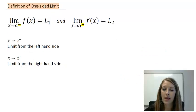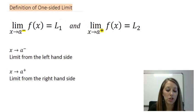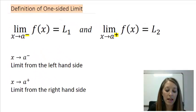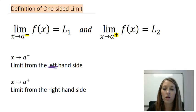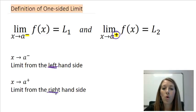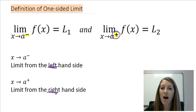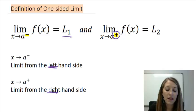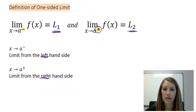It looks the same as the definition of a limit, or at least the notation, except for one small change. If we see a to the negative, that actually means we're looking at the left-hand side, or the left limit. If we see x is approaching a to the positive, then that means we're looking at a from the right-hand side, or the right limit. So if our limits from the left and right don't match, we can evaluate them separately and they can give us different values.